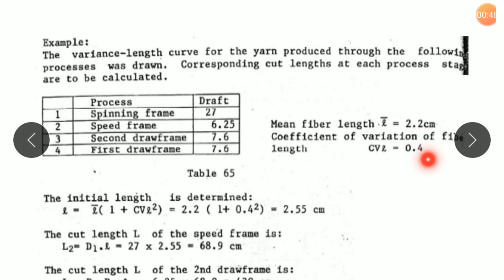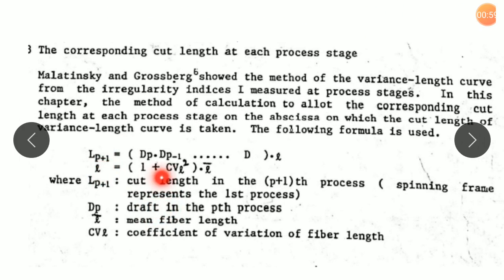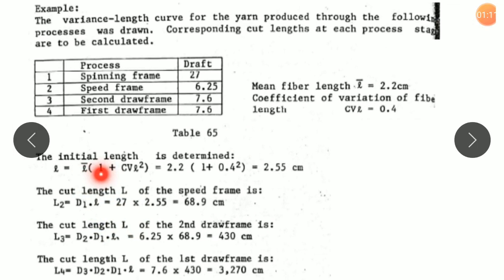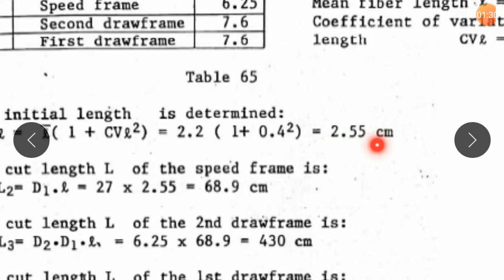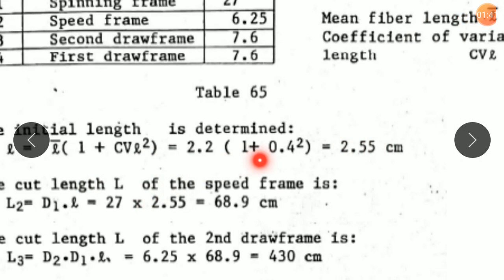So let us first calculate the value of L. L equals L̄ times (1 plus CV²), where L̄ is the mean fiber length. So L equals 2.2 times (1 plus 0.4²), which works out to be 2.55. Therefore, the initial length works out to be 2.55 cm.